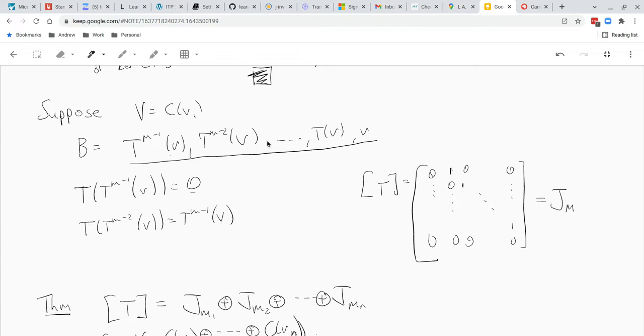What about T of T to the M minus 3? Well that's just T to the M minus 2 of V. That's my second vector. So my third column is 0, 1 followed by all zeros. And it just goes on like that. The very last column is T of V. T of V is just 1 times the second to last vector. So you get a 1 in the second to last row of the last column.